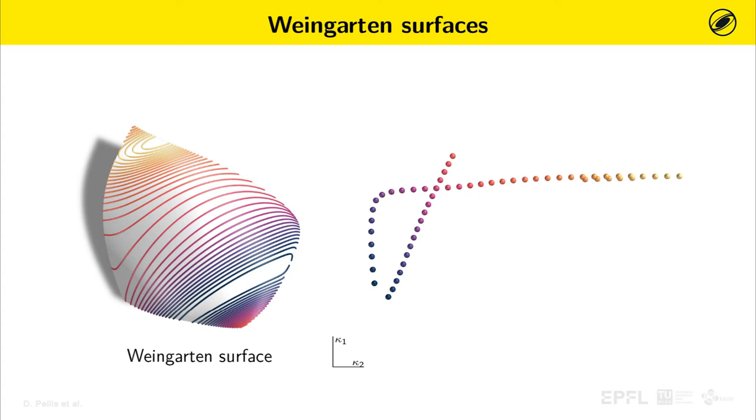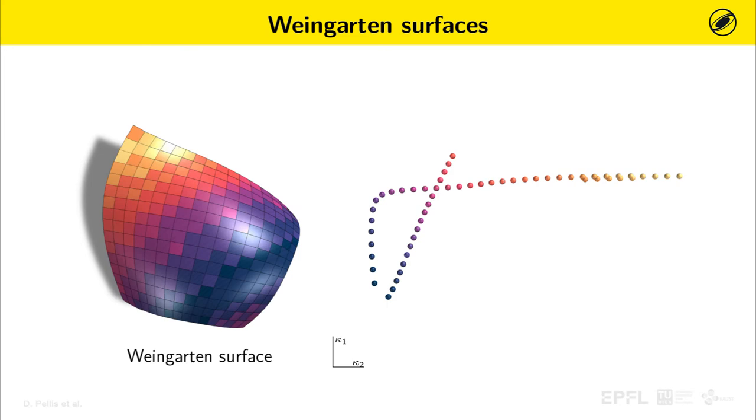To the curved points in the principal curvature plane, it corresponds a family of lines on the surface along which the principal curvatures k1 and k2 are constant. Due to this property, Weingarten surfaces are particularly interesting for architectural paneling.